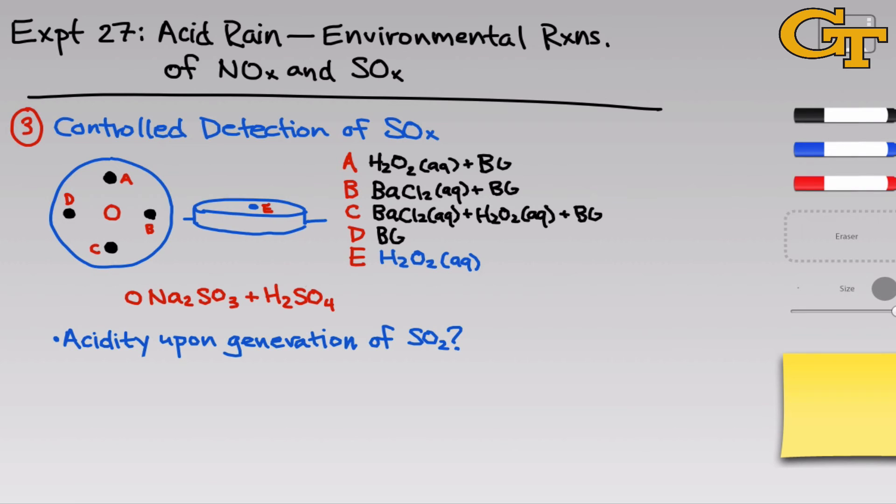In droplet D, we'll know that we have just SO2 because no oxidant is present. In drops A and C, we may have some SO3 and sulfate present. And so, see if there are different effects on acidity in the presence and absence of an oxidant.